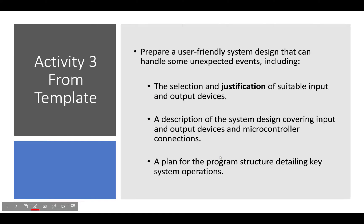Activity 3 is to prepare a user-friendly system design that can handle unexpected events, including the selection and justification of suitable input and output devices, a description of the system design covering input and output devices and microcontroller connections, and a plan for the program structure detailing key system operations. This is going to be your parts list with justification — say why you've chosen an LCD over an LED. This is also going to be your circuit diagram, and I would also do a block diagram, which isn't strictly necessary but is simple and useful.